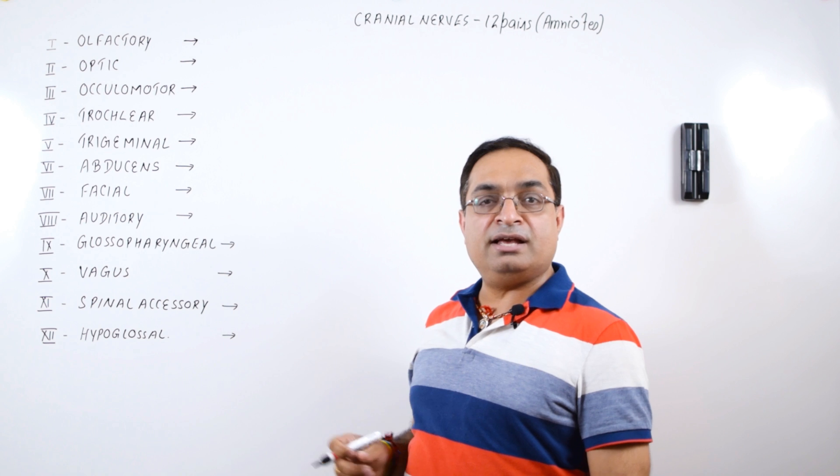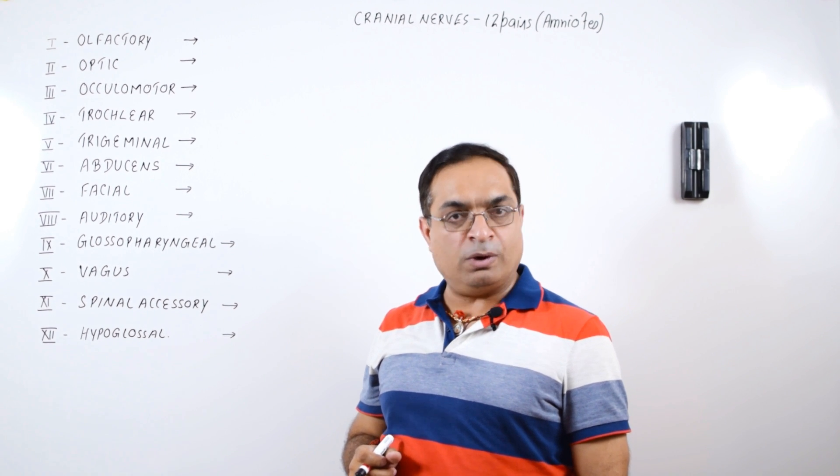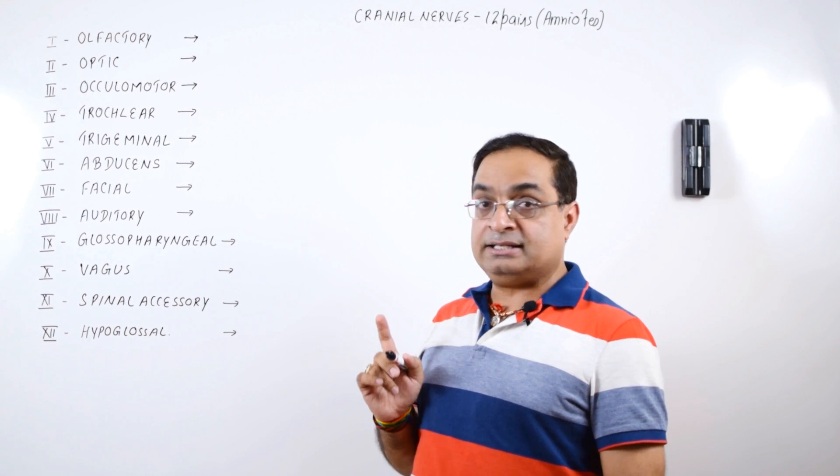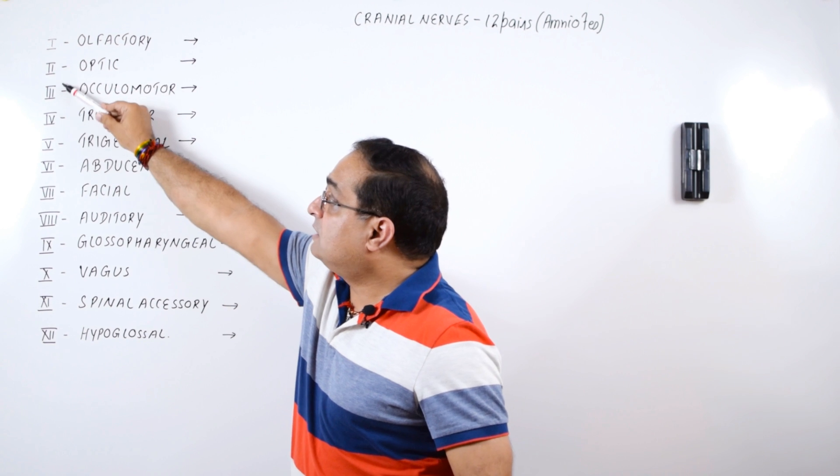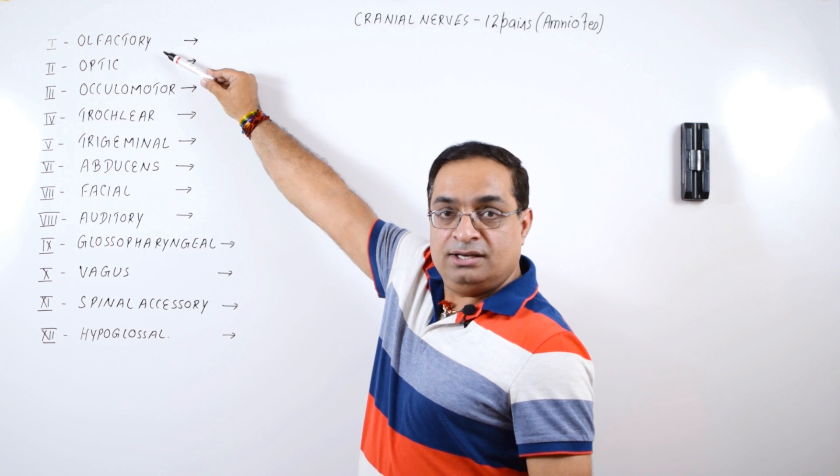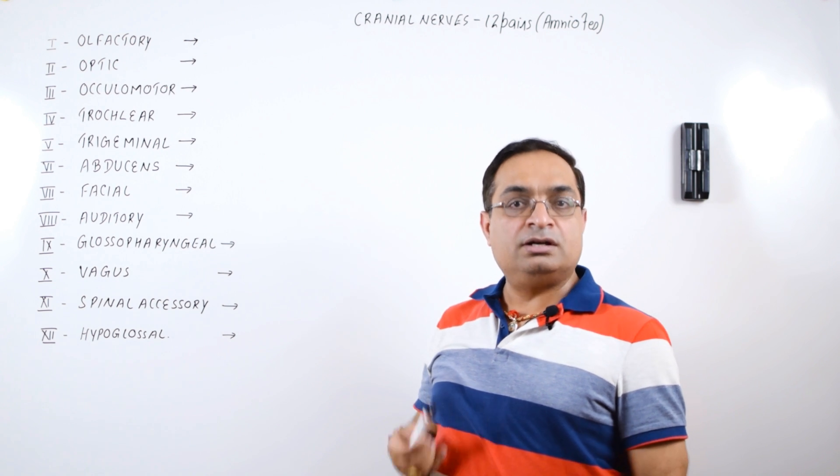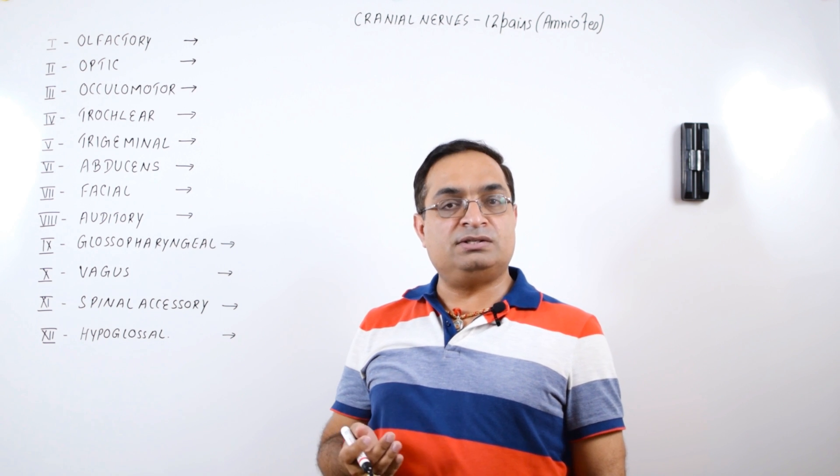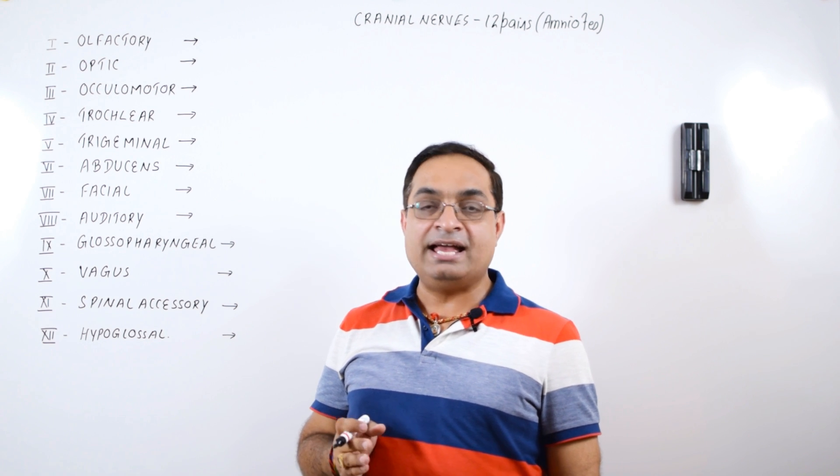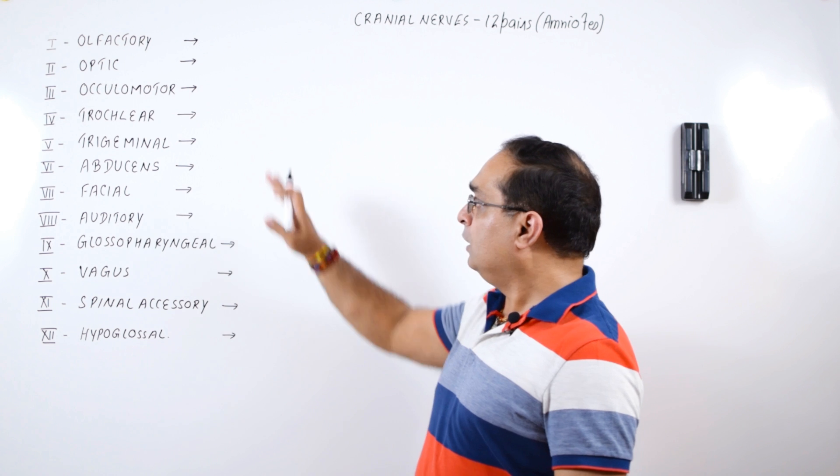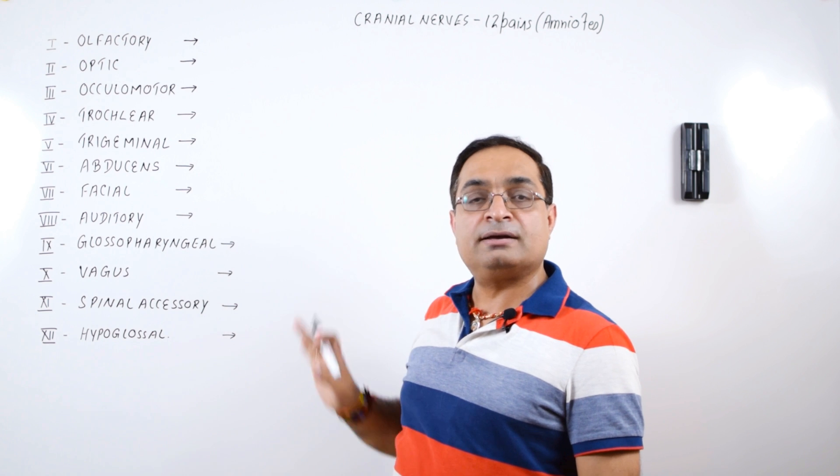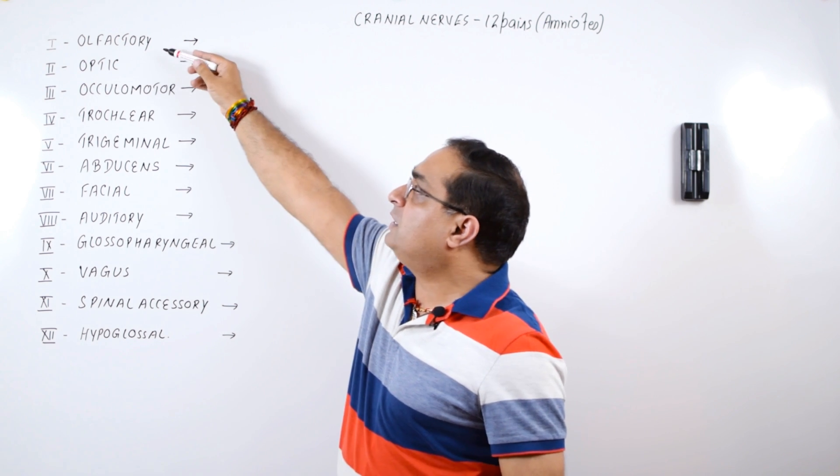As you can see here I have already listed the cranial nerves starting from 1 to 12. Please remember that we have to follow this convention that the cranial nerves are numbered in Roman numerals. The first cranial nerve is olfactory, then optic, oculomotor, trochlear, trigeminal, abducens, facial, auditory, glossopharyngeal, vagus, spinal accessory and hypoglossal.